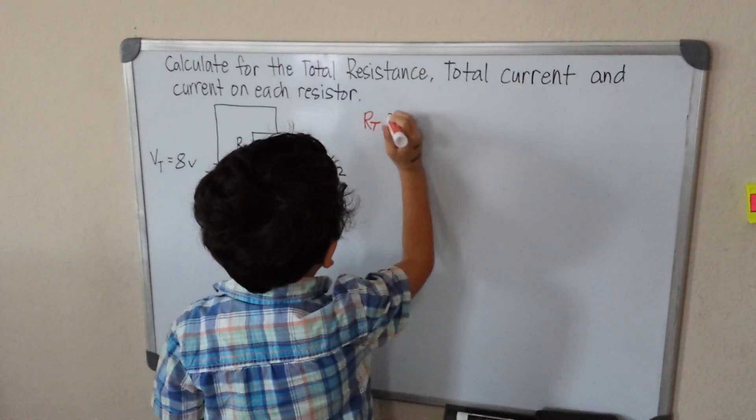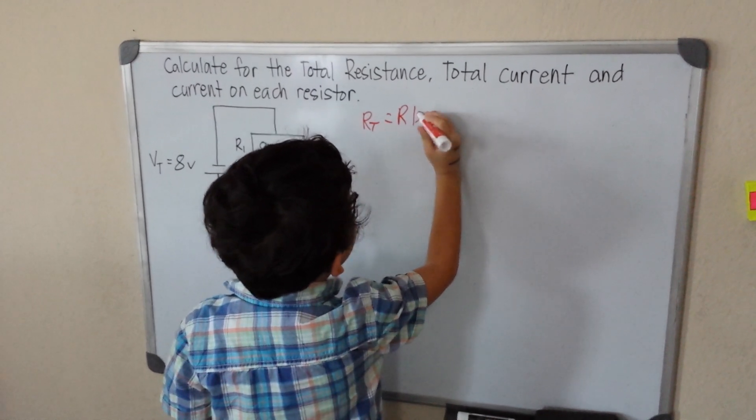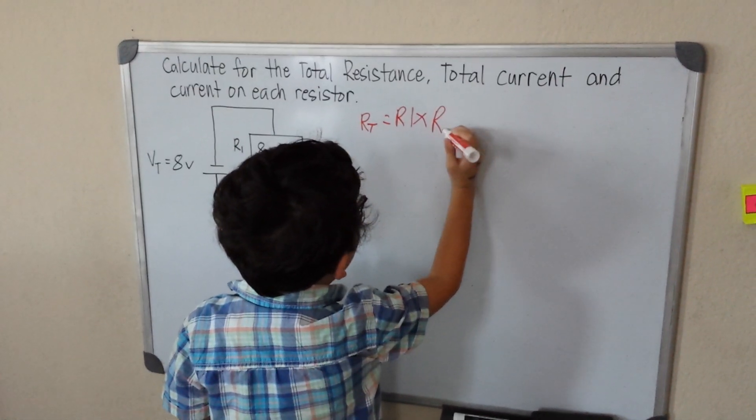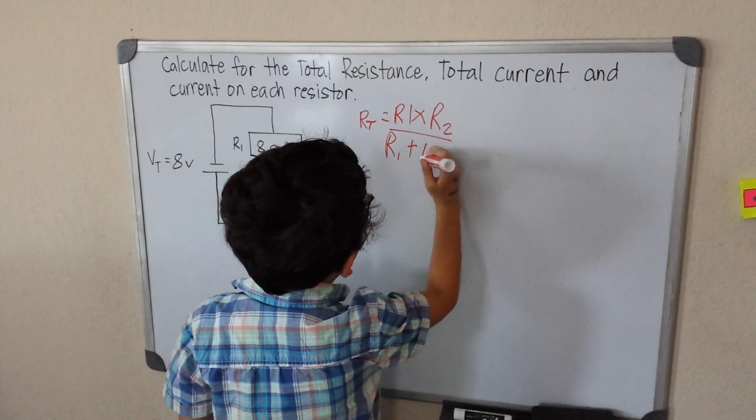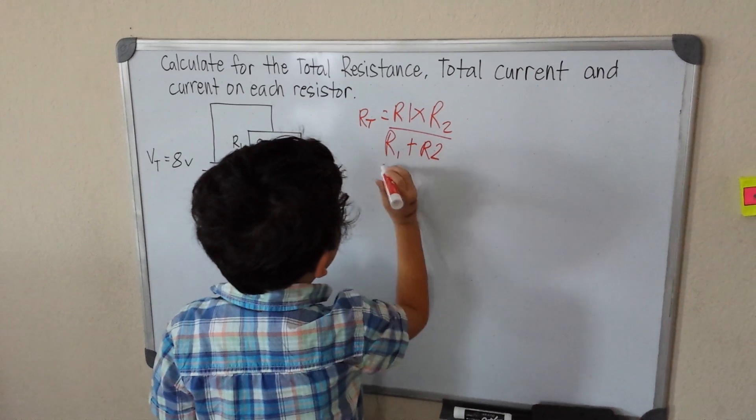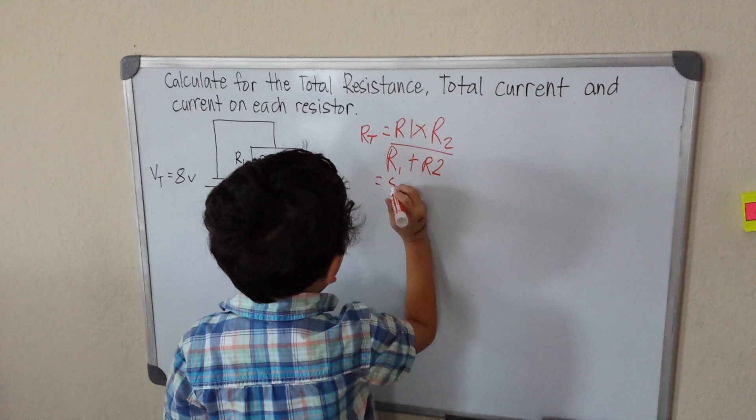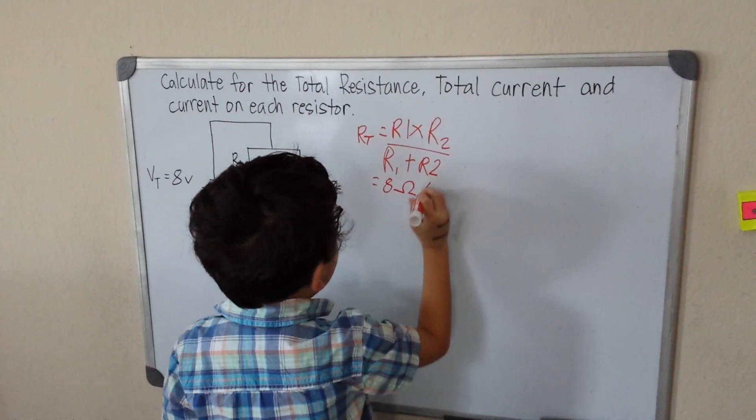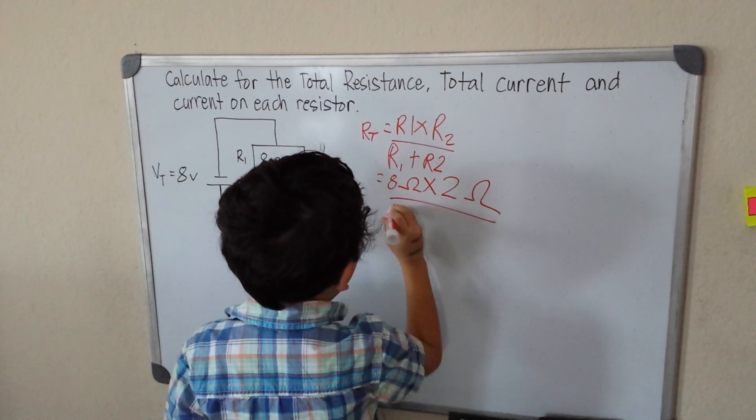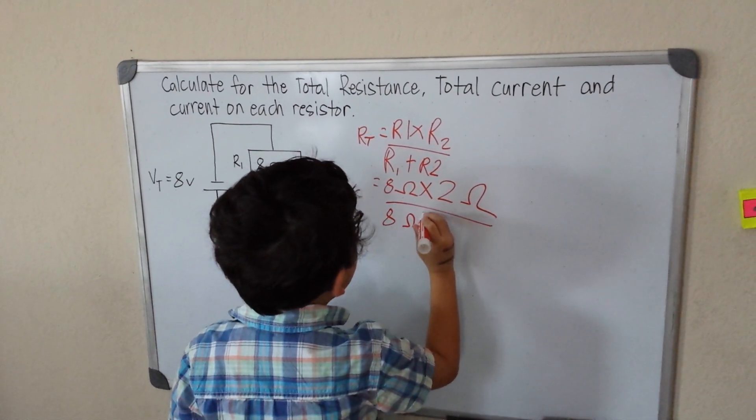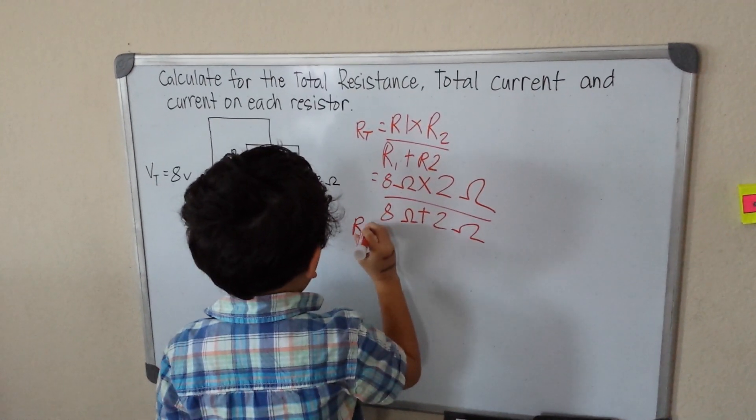So RT equals R1 times R2 over R1 plus R2. R1 is 8 ohms times 2 ohms divided by 8 ohms plus 2 ohms. So what's our total resistance?